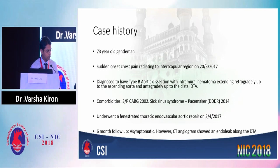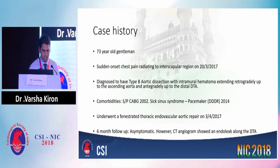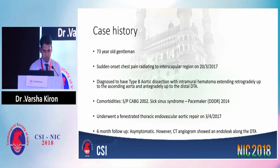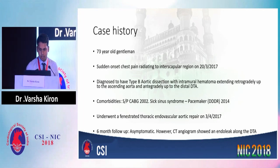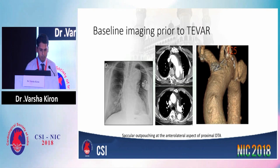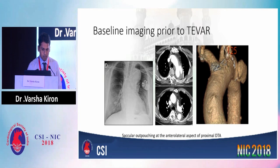He had come for a six-month follow-up at which time he was asymptomatic. However, a CT angiogram showed an endoleak along the DTA which was presumed to be a type 2 endoleak. This is the baseline imaging prior to TEVAR. There is a type B dissection with an intramural hematoma and a retrograde extension into the ascending aorta and antegrade into the distal DTA. This is a 3D reconstruction image showing the same.